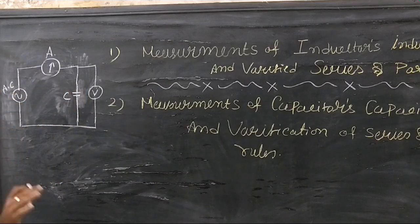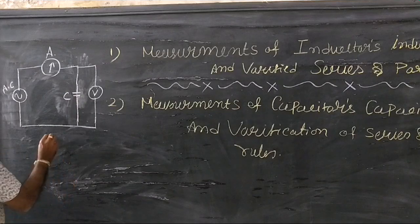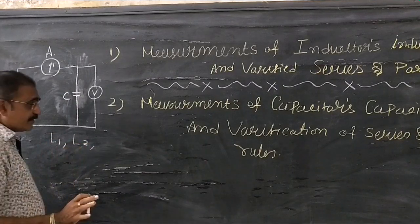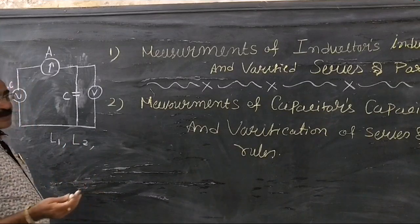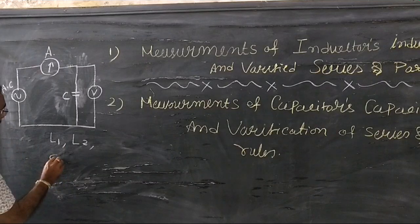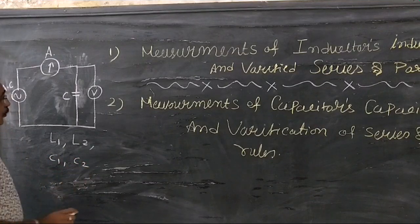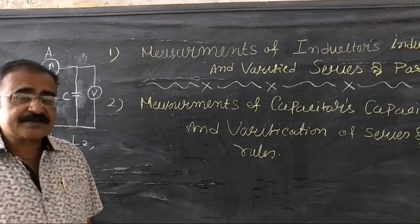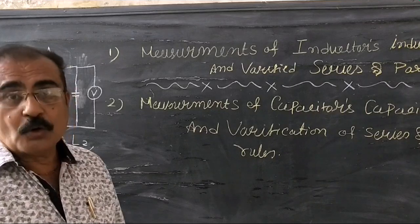First, we shall measure two inductors, L1 and L2, and then verify series and parallel rules. In the same way, we can measure two capacitors, C1 and C2, and find verifications of the series and parallel rules. The observation table aims to determine inductors' inductance and verify series and parallel combinations. The apparatus are: AC variable power supply, inductors X and Y (two inductors), AC current meter, and AC voltmeter.